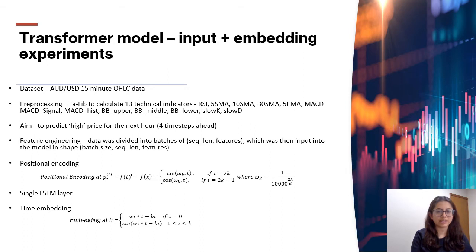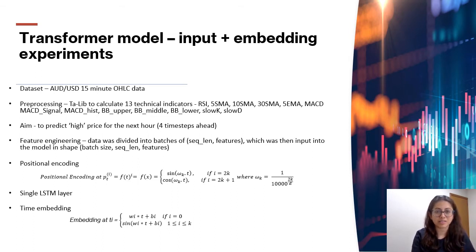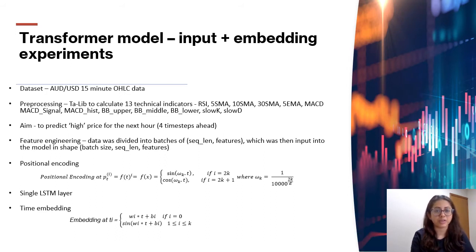Transformers are currently used widely for natural language processing tasks such as language translation. We attempt to use aspects of the transformer architecture and apply it to forex price prediction. The dataset is AUD-USD 15-minute open, high, low, close price data. We also calculate 13 technical indicators using TALIB as features. Our data is divided into validation, train, and test sets, and results are based on test data alone. Training data is divided into batches of six data points, with the output label being the high price four time steps from the last point. Each input is of dimension: batch size, sequence length, and number of features.